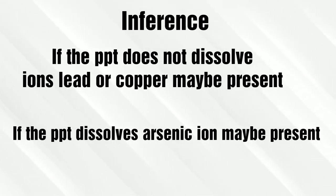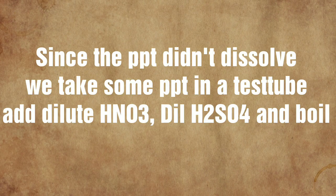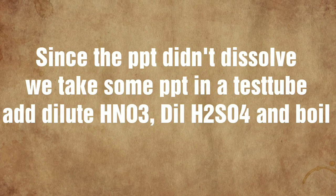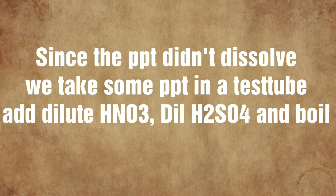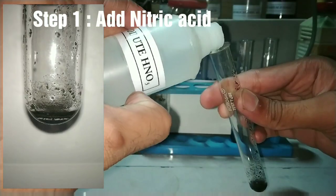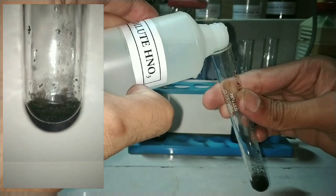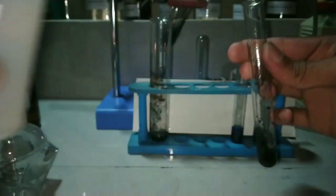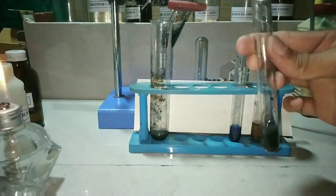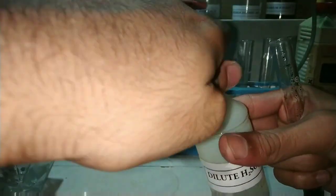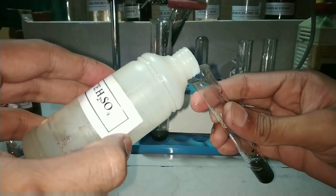But if the precipitate dissolves then it is arsenic ions. Since the precipitate did not dissolve, we will now take some of the precipitate in a test tube and add dilute nitric acid and sulfuric acid and boil the contents. To the precipitate I am adding dilute nitric acid — it's actually a 50% solution of nitric acid — and now I will be adding dilute sulfuric acid. This step of adding dilute sulfuric acid is optional, which means that you can omit it.